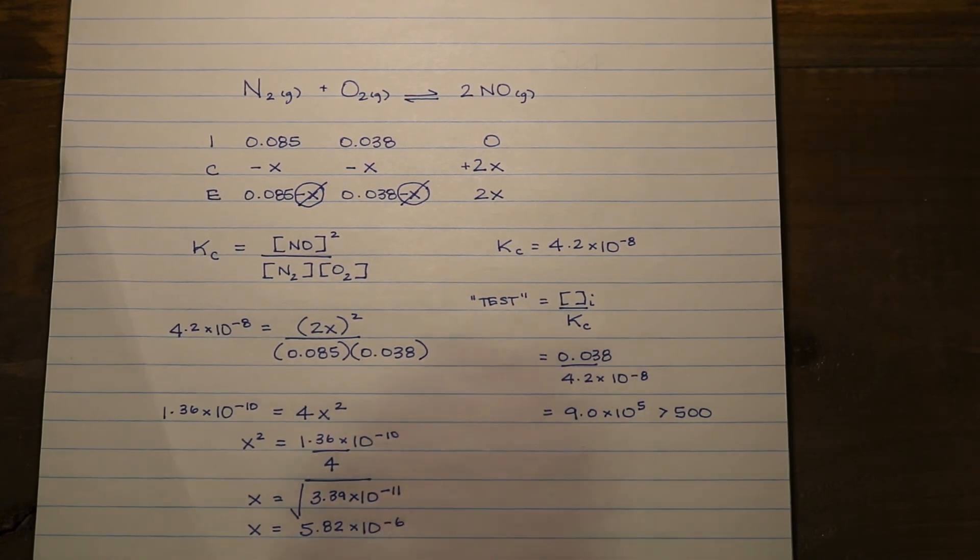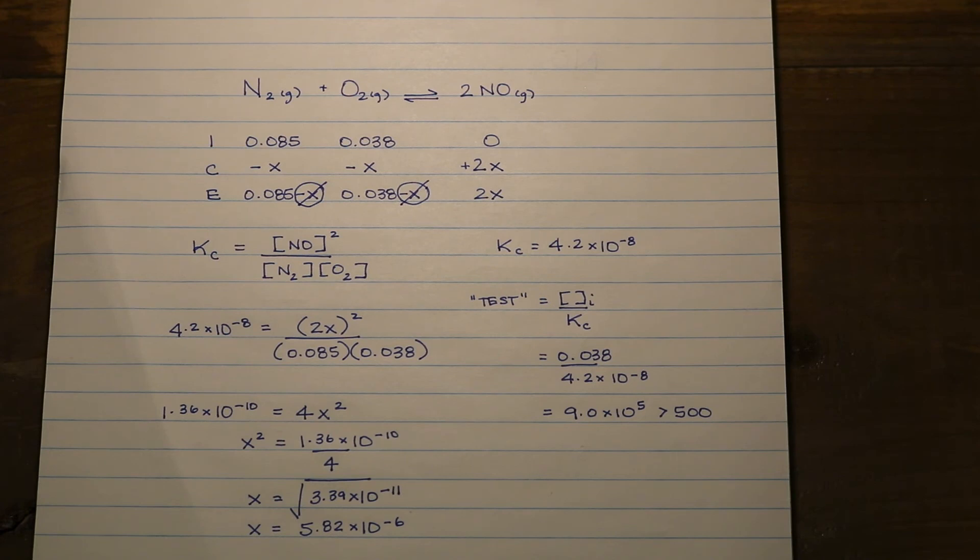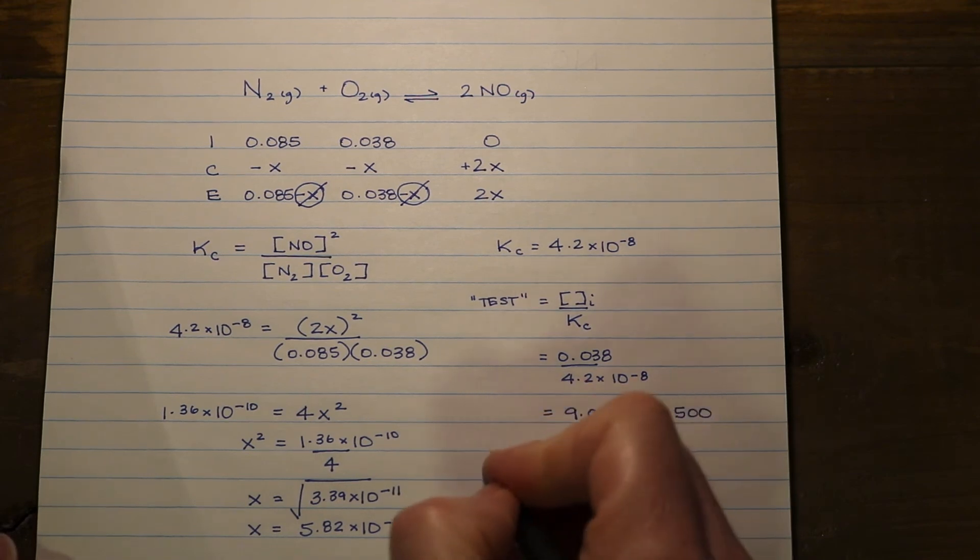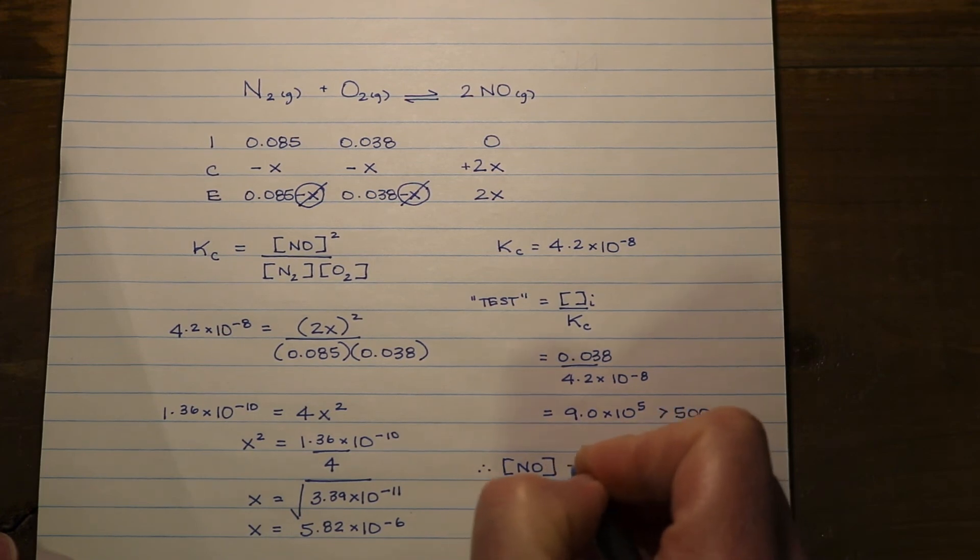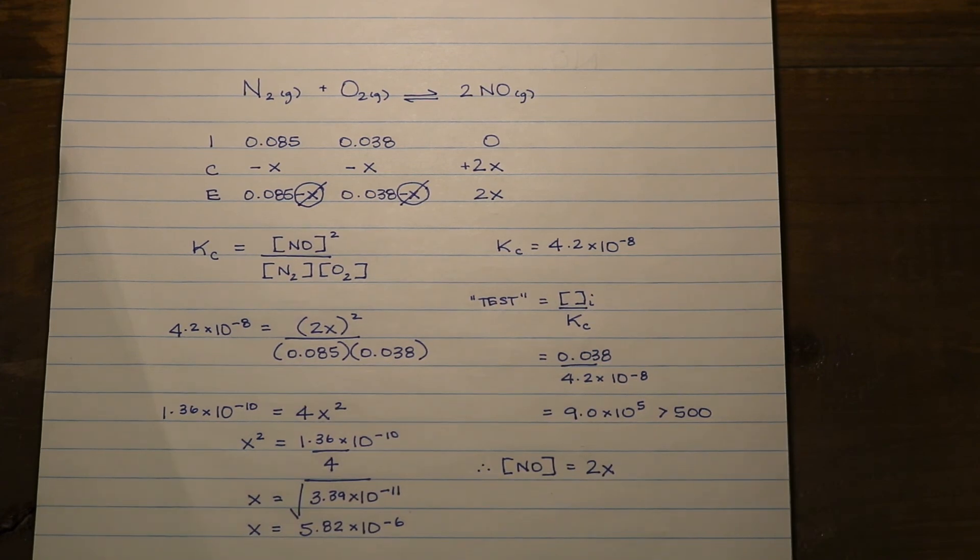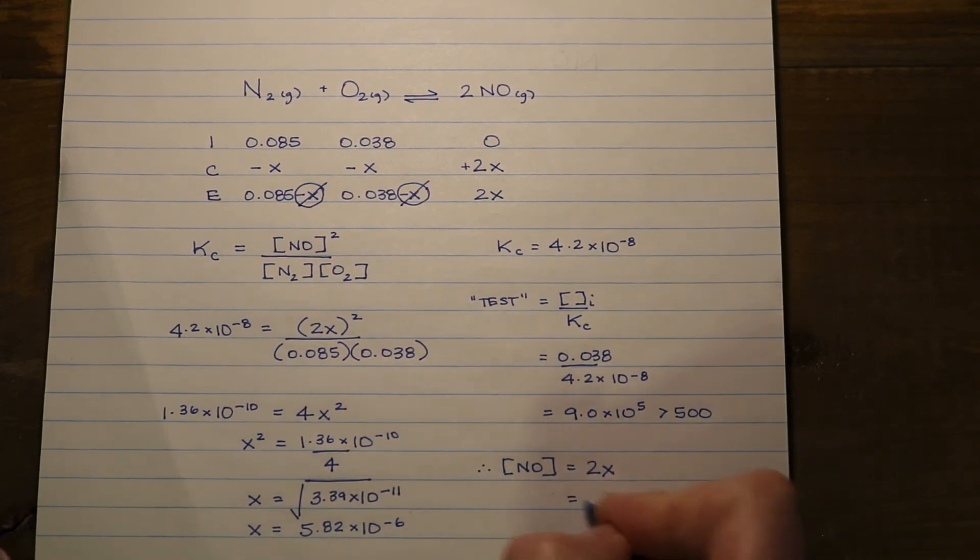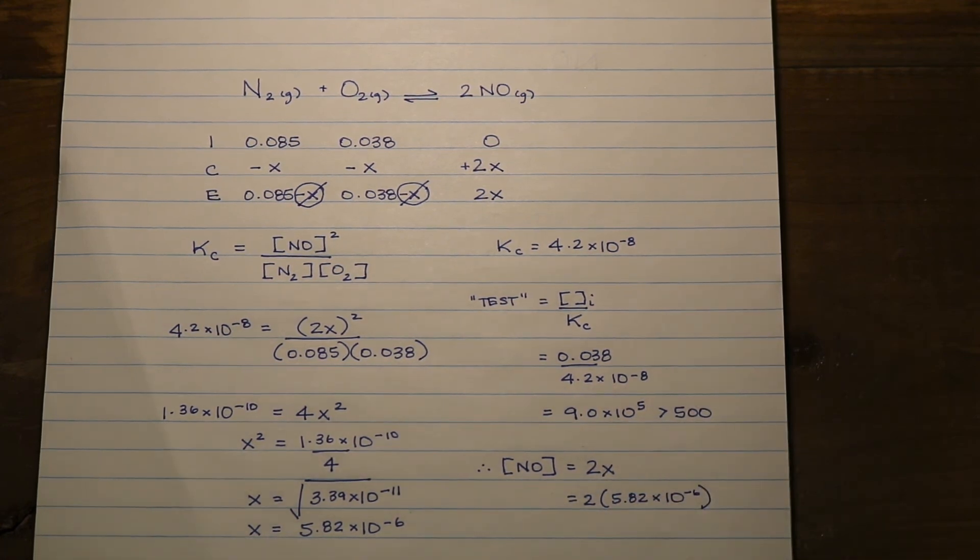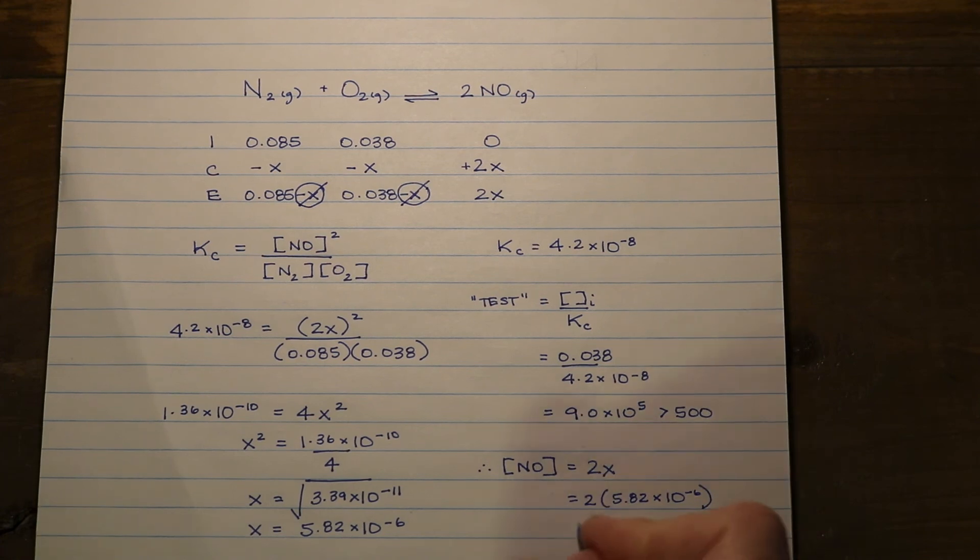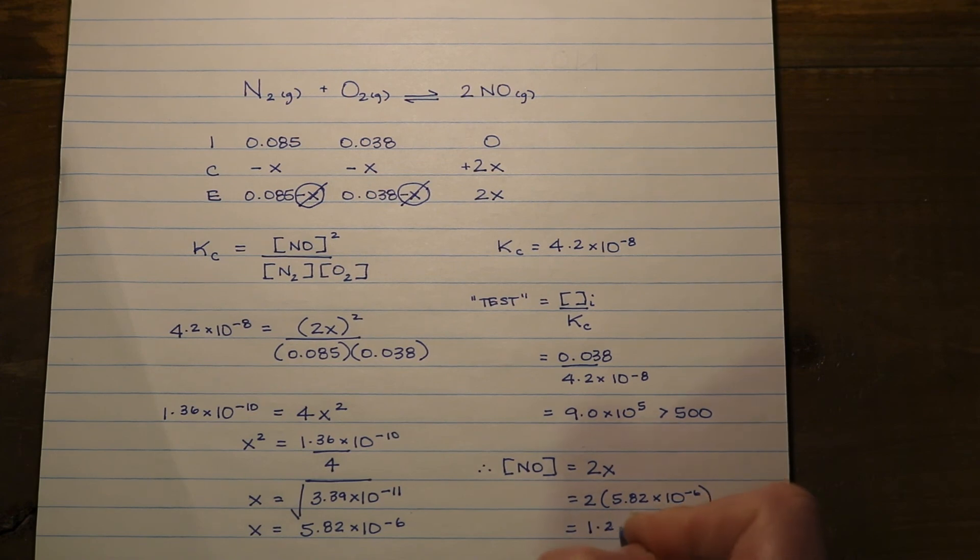I'm not done here because ultimately what we're trying to find is the concentration of the product, the nitrogen monoxide, at equilibrium. At equilibrium it is equal to 2X. Now since we have solved for X, I can take my value for X and multiply it by 2, so it's 2 times 5.82 times 10 to the negative 6. Our nitrogen monoxide concentration is 1.2 times 10 to the negative 5.